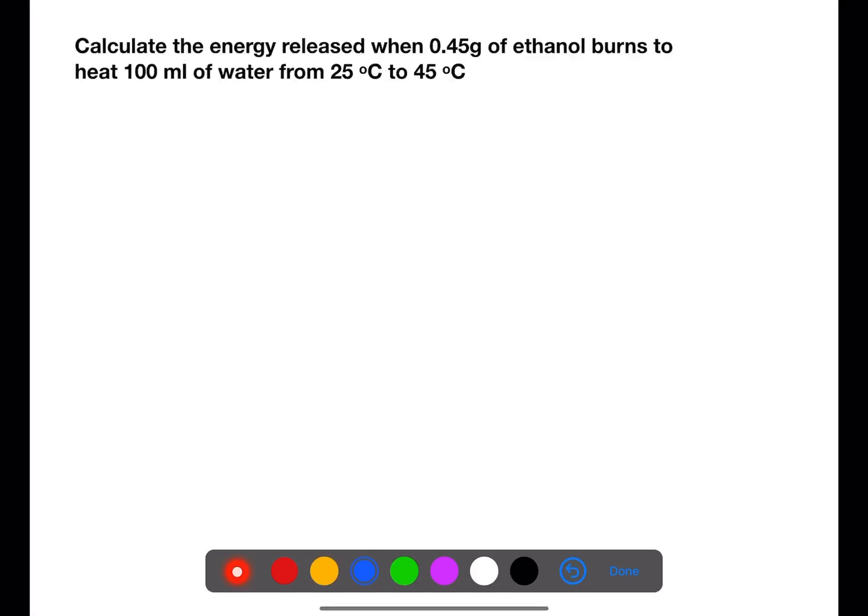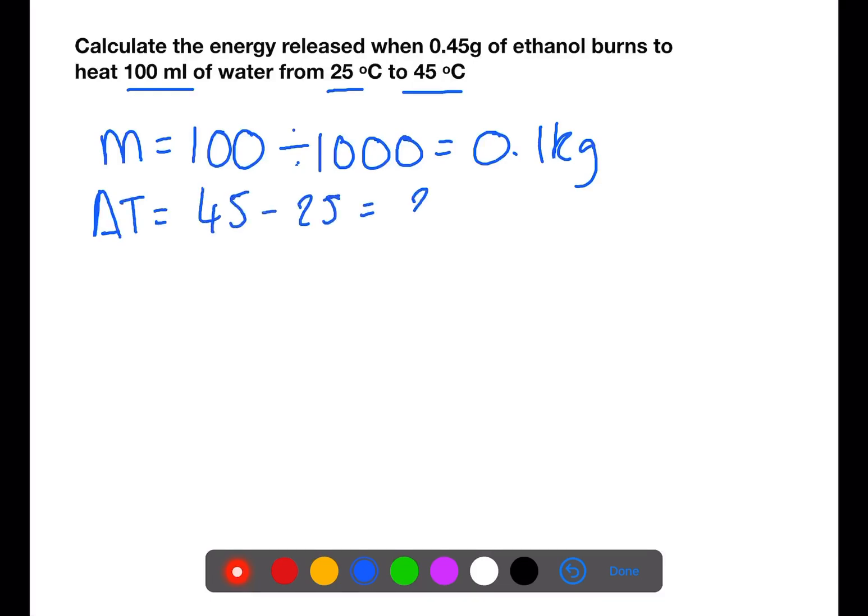Let's look at one example. Here you're asked to calculate the energy when 0.45 grams of ethanol burns to heat 100 ml of water from 25 degrees to 45 degrees. The mass of ethanol is given in the question as a red herring. The mass that you need to use is the volume of water divided by 1000 to get a mass in kilograms. The change in temperature is the end temperature minus the start temperature which gives you 20 degrees as your delta T. You then need to write out the equation E equals CM delta T and insert the values 4.18 multiplied by 0.1 multiplied by 20. This gives an energy of 8.36 kilojoules.